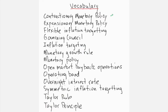Key monetary policy vocabulary includes: contractionary monetary policy, expansionary monetary policy, flexible inflation targeting, governing council, inflation targeting, monetary growth rule, monetary policy, open market buyback operations, operating band, overnight interest rate, symmetric inflation targeting, Taylor rule, and Taylor principle.